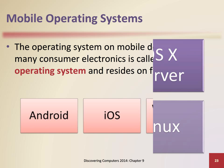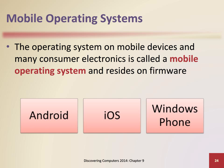The operating system on mobile devices and many consumer electronics is called a mobile operating system and resides on firmware. Mobile operating systems typically include or support calendars, contact management, text messaging, email, touchscreens, accelerometer, digital cameras, media players, speech recognition, GPS navigation, a variety of third-party apps, a browser, and wireless connectivity.